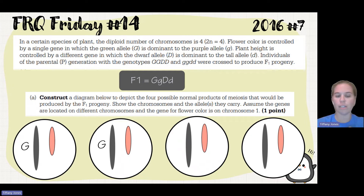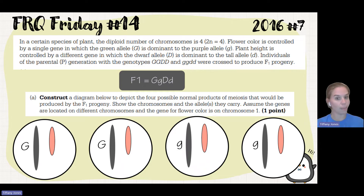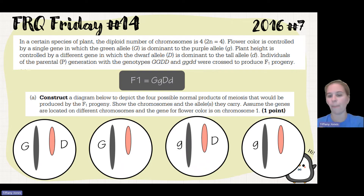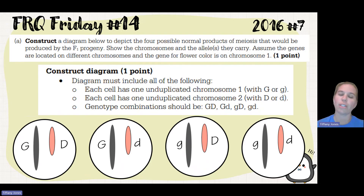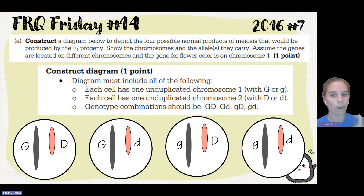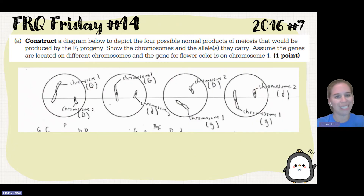We'll put two capital G alleles in two cells and two lowercase G alleles in the other two cells. Then, because of independent assortment, we'll put capital D with capital G, and capital D with lowercase G. The same applies for our lowercase D's — one with capital G and one with lowercase G — giving us our four different combinations. Each cell has one of chromosome 1 and one of chromosome 2 with the appropriate allele combinations.